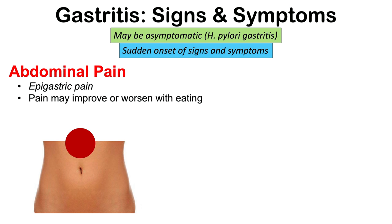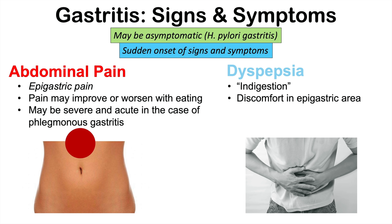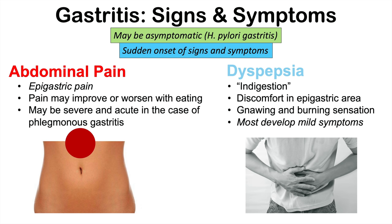In some very rare cases, this pain can be very severe and acute, as would be found in the case of phlegmonous gastritis, where the stomach becomes gangrenous. Another very common symptom of gastritis is dyspepsia, which can be considered indigestion — a discomfort in the epigastric area. It can be described as a gnawing and burning sensation in that area, and oftentimes it's going to be mild in severity.